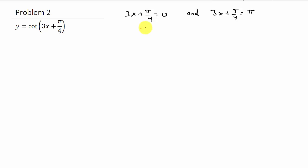Alright, so we'll subtract π over 4 to both sides. So that gives us 3x equals negative π over 4.